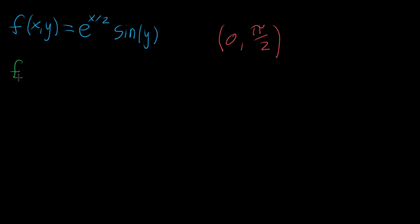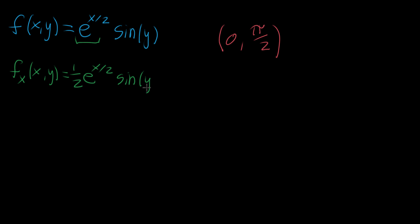Let's start with the partial derivative with respect to x, which is also a function of x and y. Looking at the original function, the only place x shows up is in e to the x over two. The derivative of that brings down one half, giving us one half times e to the x over two, multiplied by sine of y — which looks like a constant as far as x is concerned. When we do the partial derivative with respect to y, the first part looks like a constant, and the derivative of sine is cosine, so we get e to the x halves times cosine of y.